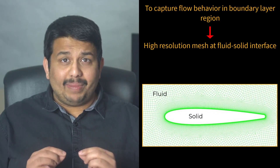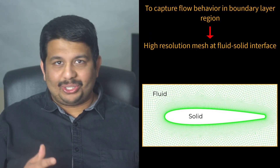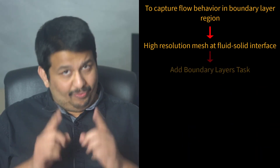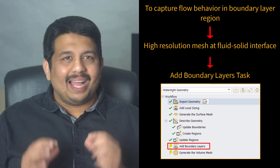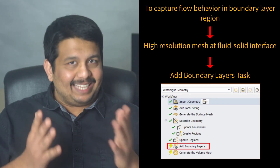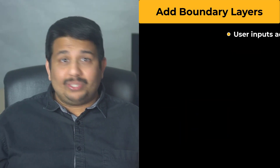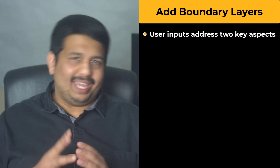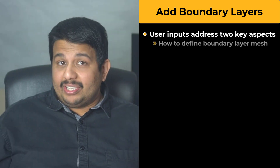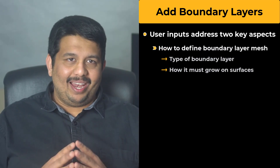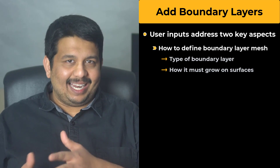When simulating a fluid flow problem using CFD, high-resolution mesh is required at the fluid-solid interface to capture the complex fluid flow behavior in the boundary layer region. For this, the Watertight Geometry workflow has the Add Boundary Layers task, using which the required boundary mesh can be defined. The user inputs required to define the boundary layer mesh need to provide information regarding two key aspects. The first is how to define the boundary layer mesh, which includes the type of boundary layer and how it must grow on the selected surfaces.